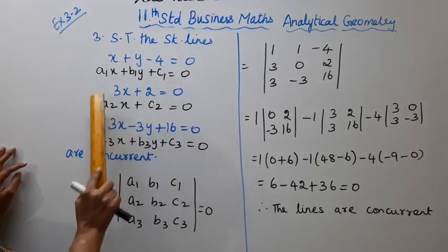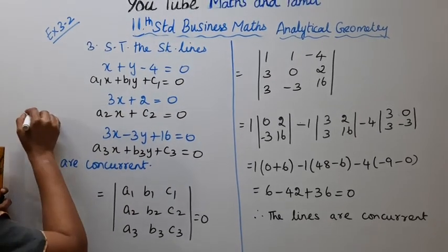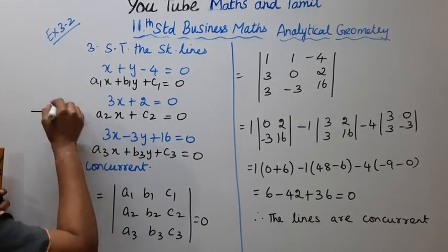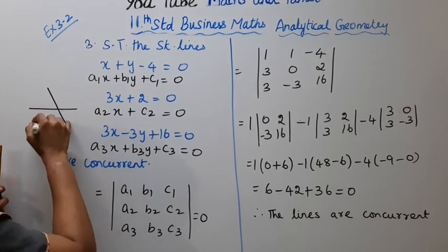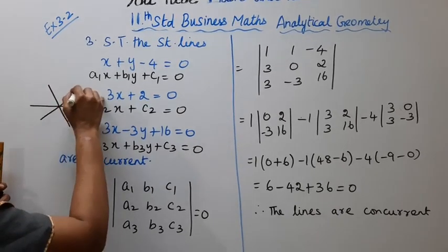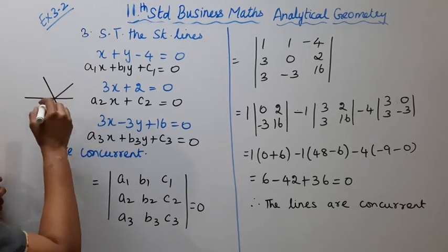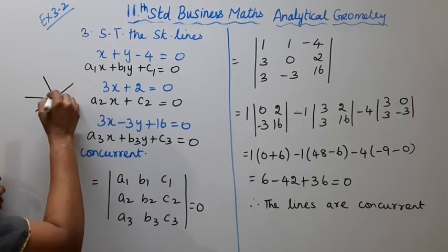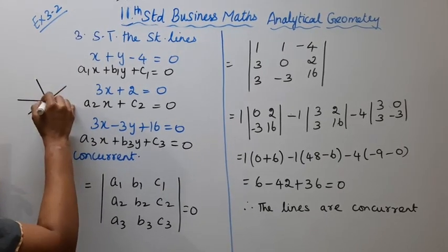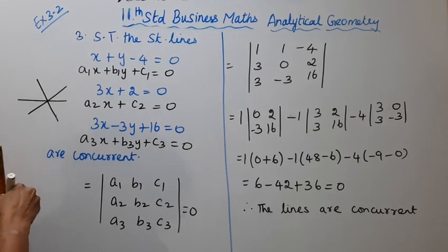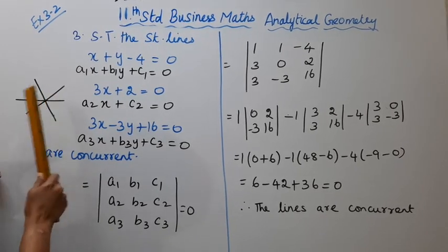Three lines are concurrent. All three lines have a meeting point — they all pass through the same one point.